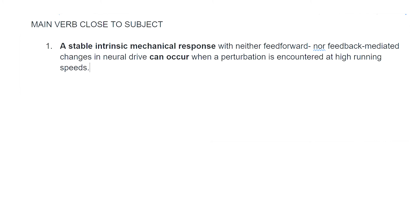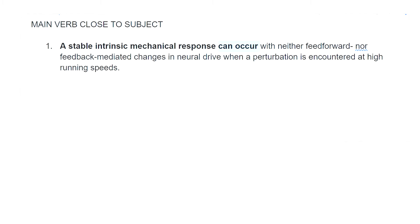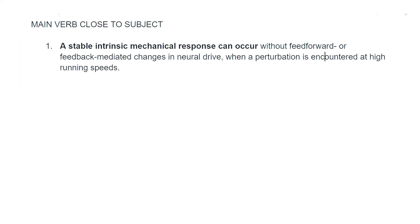We want to change this — we want the subject and verb next to each other: 'A stable intrinsic mechanical response can occur with neither feedforward nor feedback-mediated changes in neural drive when a perturbation is encountered at high running speeds.' I also don't like 'neither...nor' here, so let's change that to 'without feedforward or feedback-mediated changes in neural drive, when a perturbation is encountered at high running speeds.'